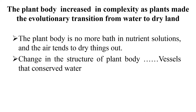Once natural selection had shaped the adaptations that help plants to live on land, when plants colonized the land they faced a range of challenges posed by the terrestrial environment. The plant body is no longer bathed in a nutrient solution, and the air tends to dry things out. These conditions drove the evolution of structures that support the body, vessels that transport water and nutrients to all parts of the plant.